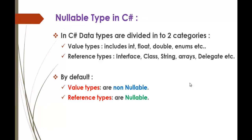To understand Nullable Type, first let us understand what Data Types are in C# and what categories are present. In C#, data types are divided into two categories: Value Type and Reference Type. Value Types include the built-in data types Int, Float, Double, Enums, etc. Reference Types include the built-in data type String and other reference types like Class, Interface, Arrays, Delegate, etc.